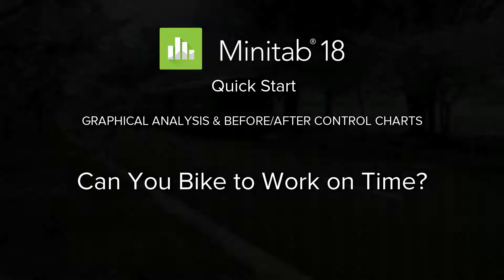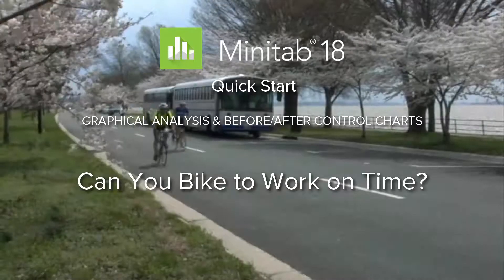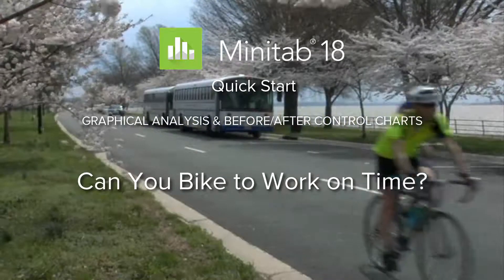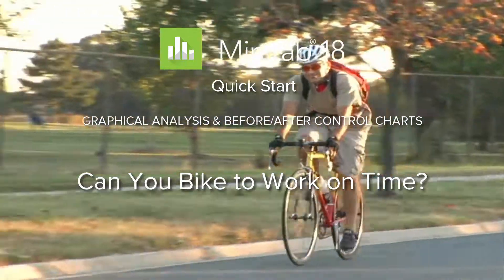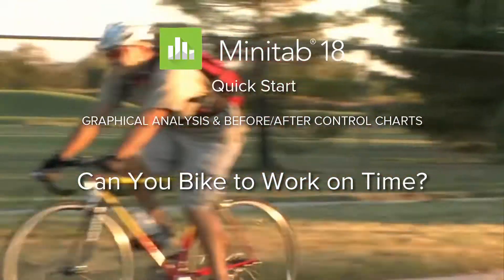Joel's boss believes that since he began biking to work, Joel often arrives late to the office. But Joel, who has been logging his daily commute time, thinks his boss is mistaken.